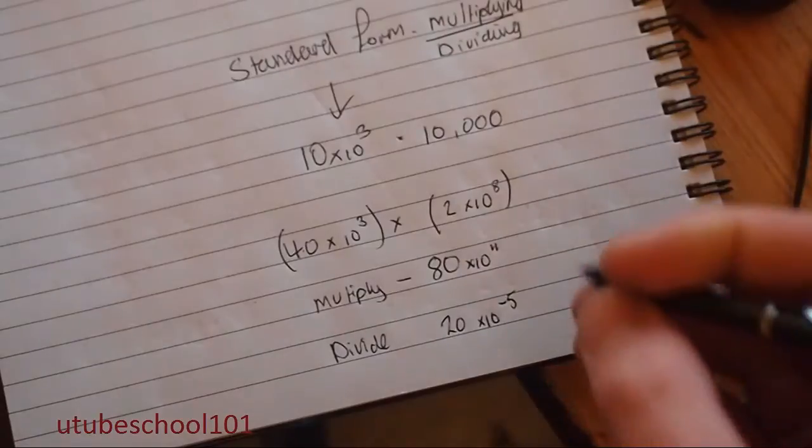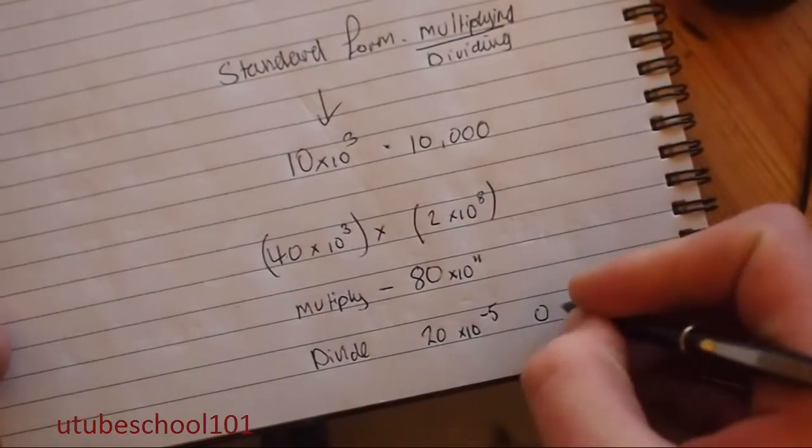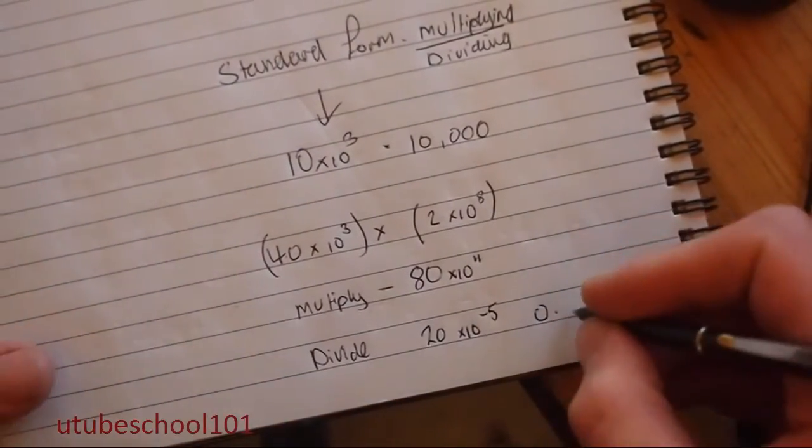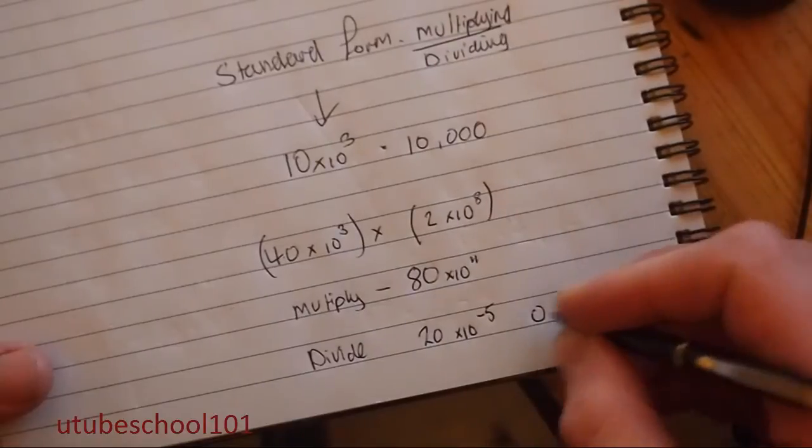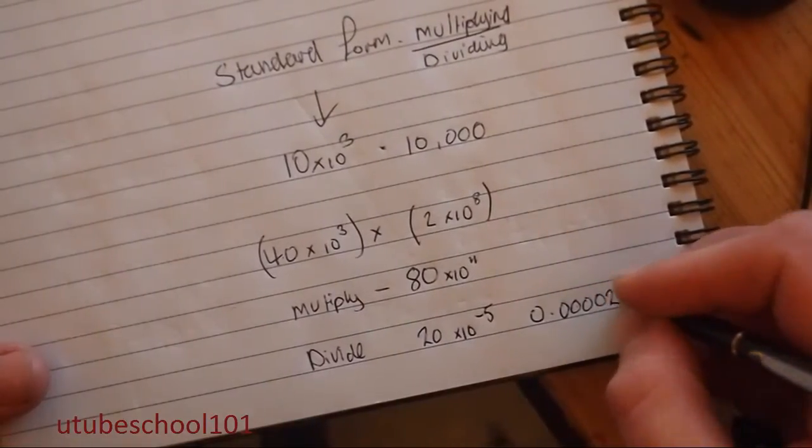So if you're wondering what the negative power is, you simply draw in the... Remember, you have to put the first 0 in. That counts. 1, 2, 1, 2, 3, 4, 5, 20.